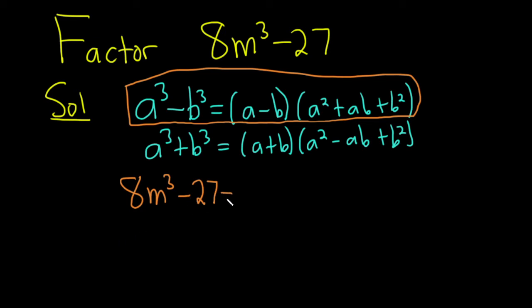This is actually equal to (2m)³ minus 3³. That's because when you cube the 2 you get 8, cube the m you get m³. Very important. Your a here is 2m and your b is 3. It's really important to write it this way.